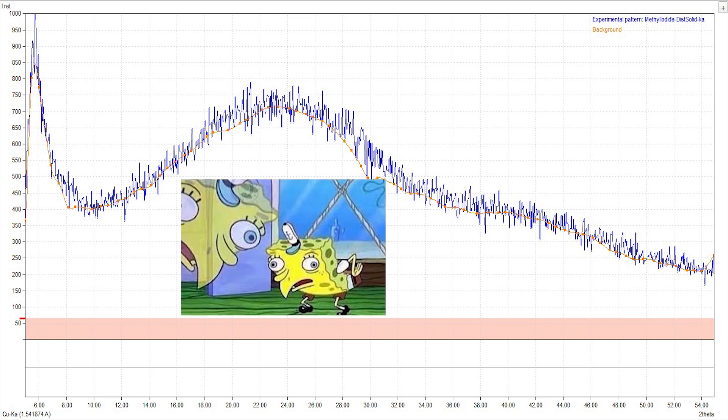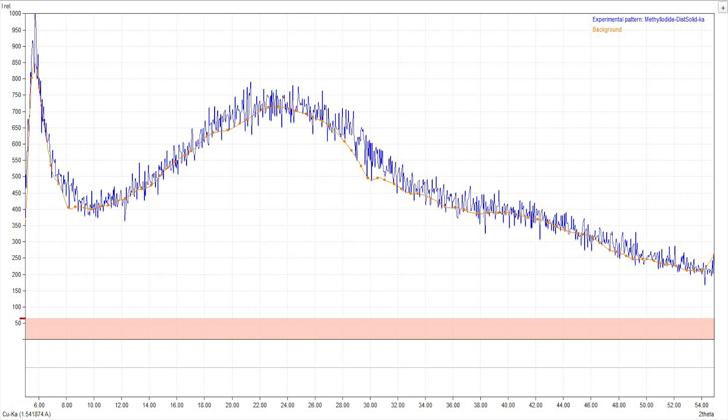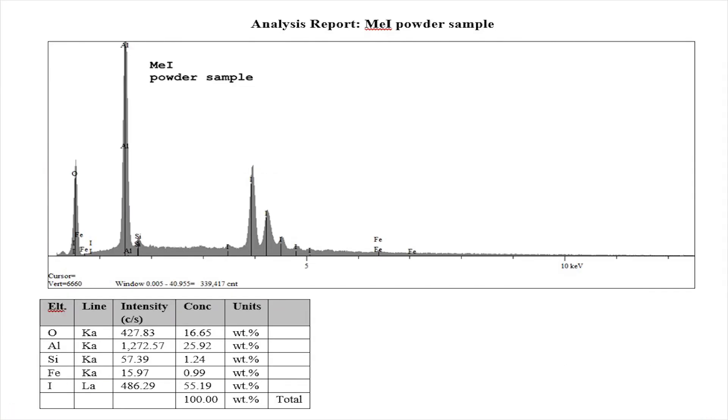I took the time to do an elemental analysis and that told me a lot. I can see I've got a lot of aluminum, a lot of iodine, and a lot of oxygen. However, for now I'm going to sit on that information and work on the distillate.